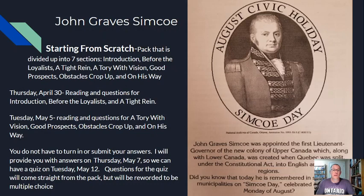Your assignment for the next almost two weeks is to complete a pack called Starting From Scratch. It is divided up into seven sections. There's an introduction as the first section, and then all these titled sections: Before the Loyalist, A Tight Rain, A Tory with Vision, Good Prospects, Obstacles Crop Up, and On His Way.